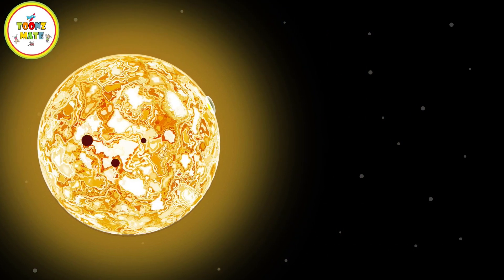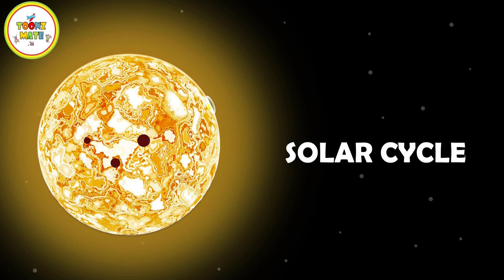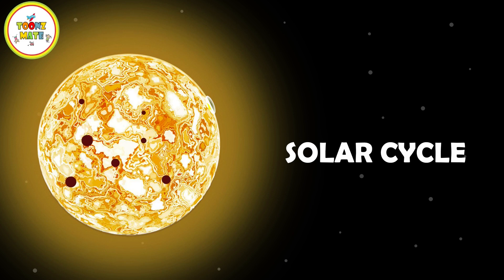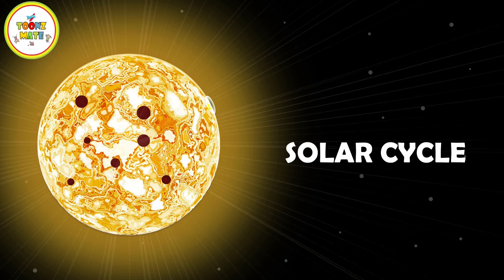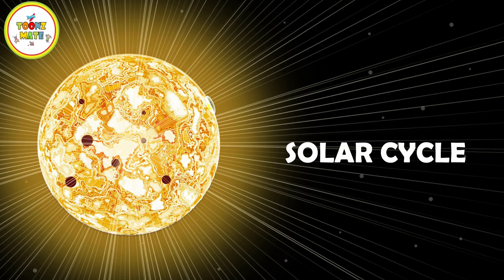The Sun has an 11-year activity cycle known as the solar cycle. During the peak of this cycle, the number of sunspots increases, as well as other solar phenomena like solar flares and coronal mass ejections.